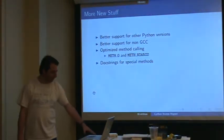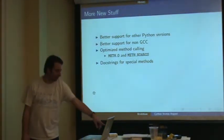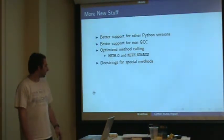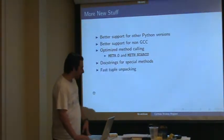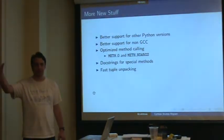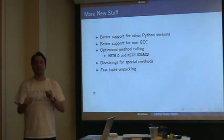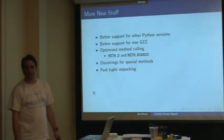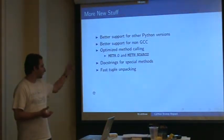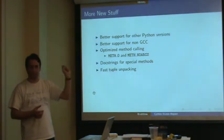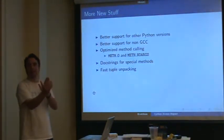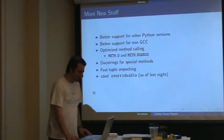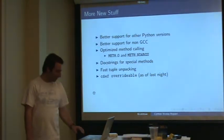Special methods now have docstrings, due to a patch by Nick Alexander. That actually led to the optimized method calling, because you have to set a flag and do some special stuff since the signatures are a little bit different. And then fast tuple unpacking — when you call 'x, y = foo()', before it would return the tuple and then call sequence unpacking code. Now it checks if it's exactly a tuple and if so, if it's the right length, it unpacks it directly using macros. This is new as of last night.